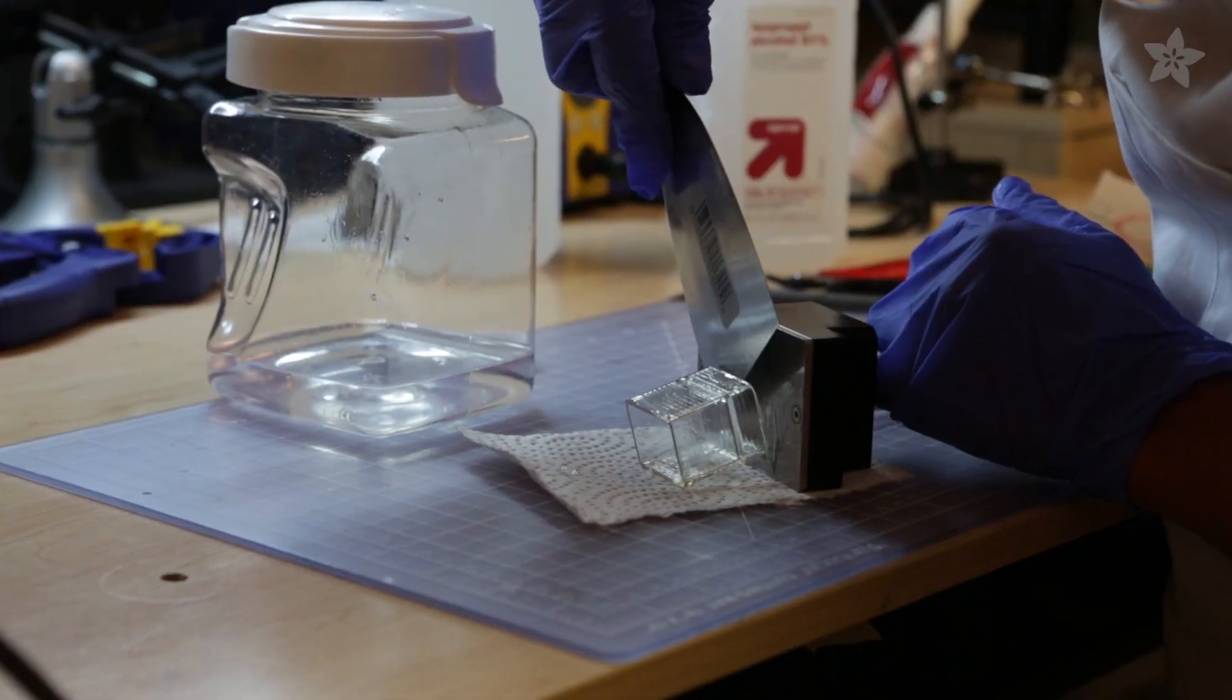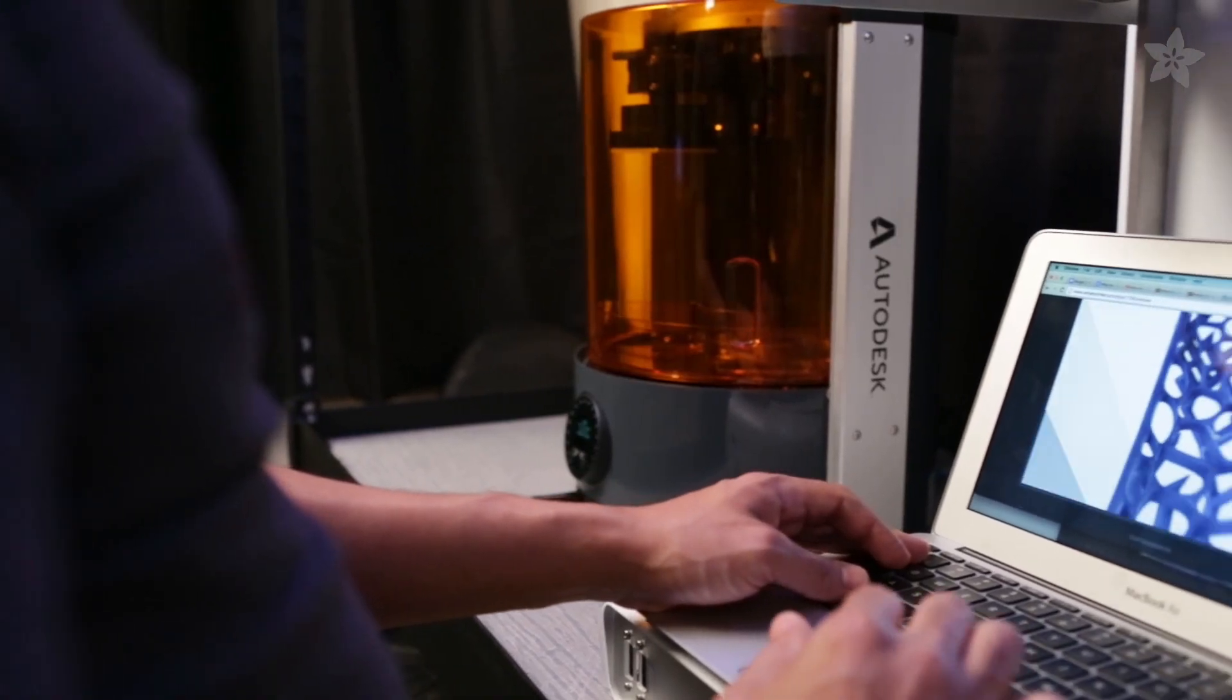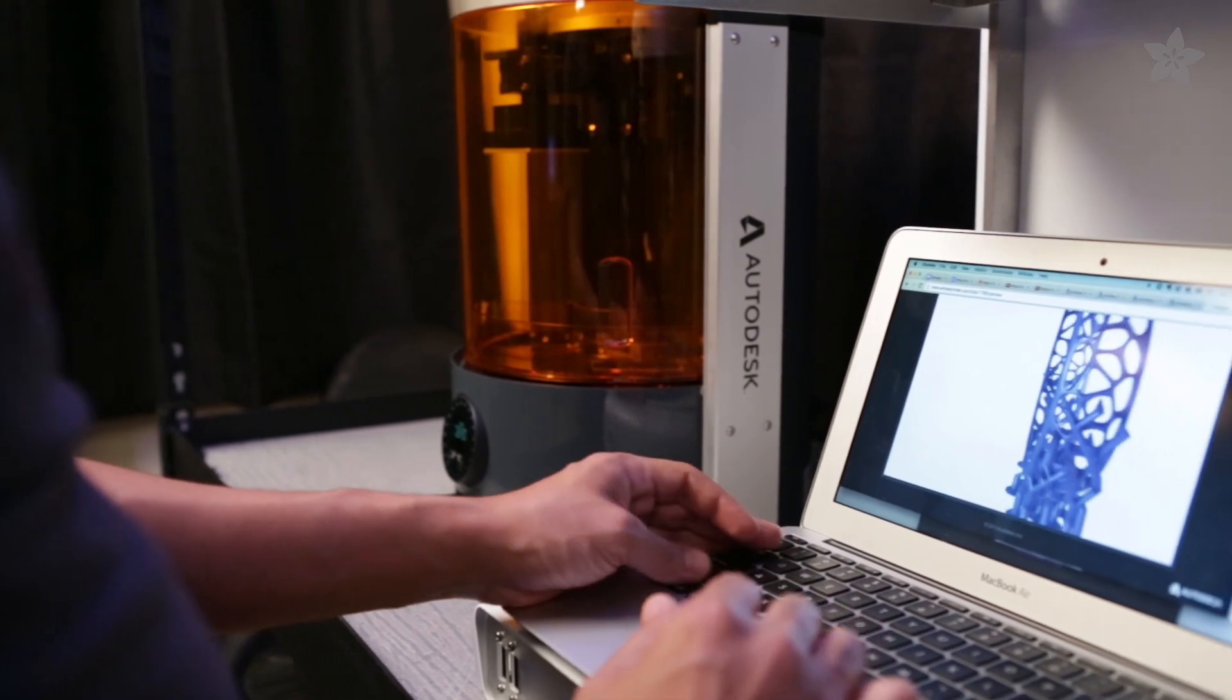Enclosure parts that are smaller than 30mm can actually print without any support material. STL models are going to get prepared using Autodesk's Meshmixer, and here you can set up your support structures to hold onto the models to the printhead.